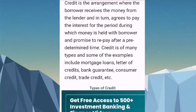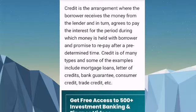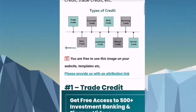In this video I will discuss what is credit and 8 types of credit in detail. Credit is an arrangement where the borrower receives money from the lender and in turn agrees to pay interest for the period during which money is held, and promises to repay after a predetermined time. Credit is of many types; examples include mortgage loans, letter of credit, bank guarantee, consumer credit, and trade credit.